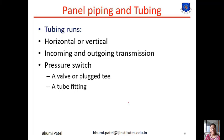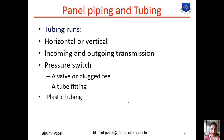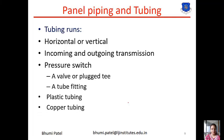This is the pressure switch requirement for the tubing run. Now there are three types of material used for the tubing run. First one is the plastic tubing. Plastic tubing has been increasingly used for pneumatic installation because it reduces labor cost compared to metal tubing. Next one is the copper tubing. Copper tubing is good for tube bending but its cost is more compared to plastic tubing.